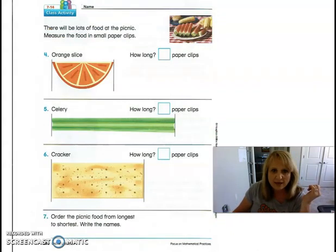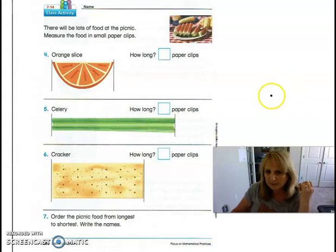Let's go ahead and turn to the back of this page and we are going to need our paper clips or a piece of paper cut into one inch strips. All right, it says there will be lots of food at the picnic. Measure the food in small paper clips. So remember you need to use the small ones that are about one inch long. We have an orange slice. Now we're not going to measure the orange slice around this way. We're going to measure it from edge to edge. So you want to start your paper clip right here. And how many paper clips would it take to get to the other end? So you pause the video and measure with your paper clips and write the number, and then check back with me.